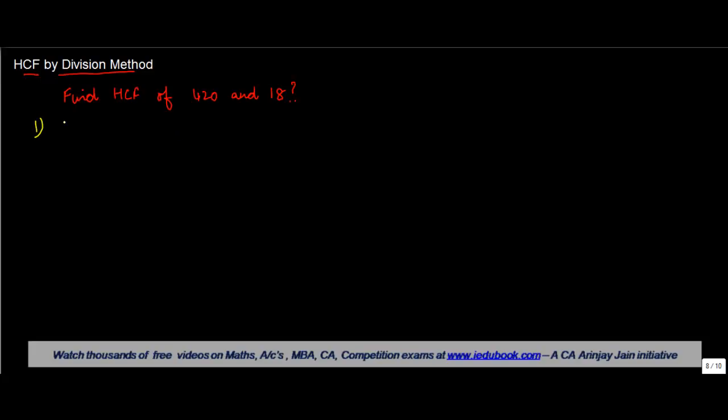Step one, find the bigger number and divide it by smaller one. So, in this case, our bigger number is 420 and the smaller one is 18.